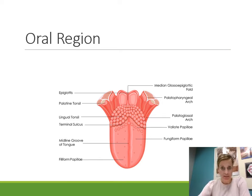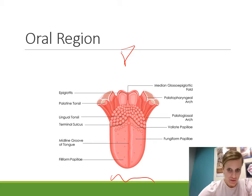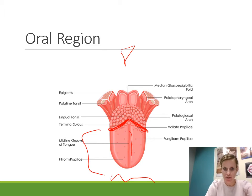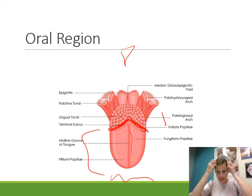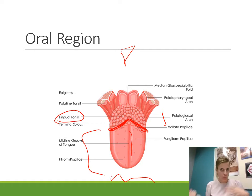Here we see the tongue itself. The anterior aspect is up front and the posterior aspect is back here. You can see there's a midline groove along the tongue, and that terminal sulcus we were talking about is back here — this V-shaped terminal sulcus that divides the tongue into the anterior tongue and the posterior tongue. The posterior tongue is lymphoid tissue, with all of the lymphoid nodules congregated together giving us the lingual tonsil.